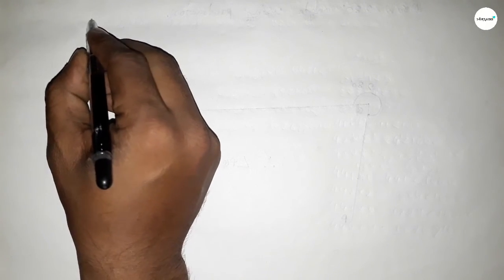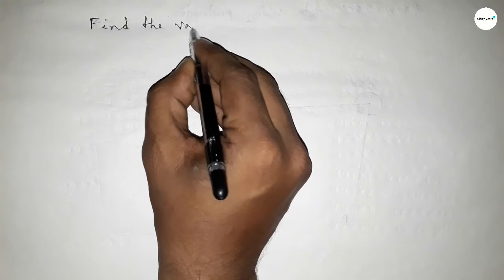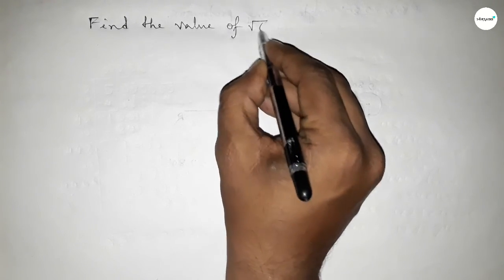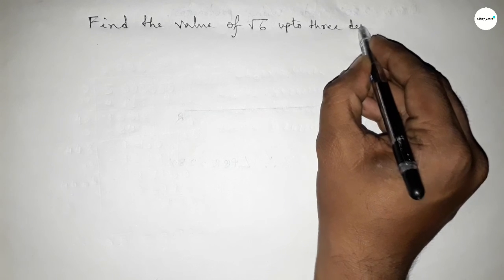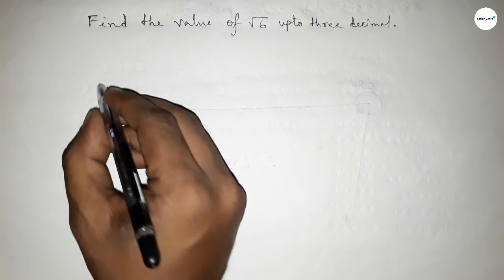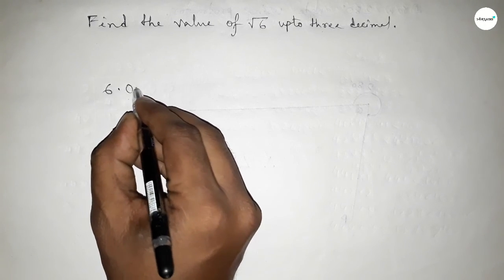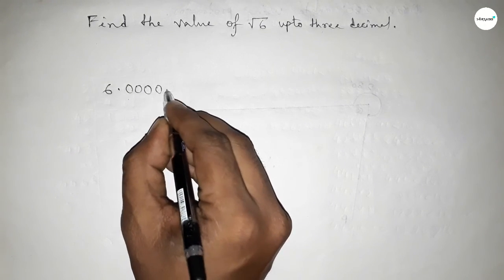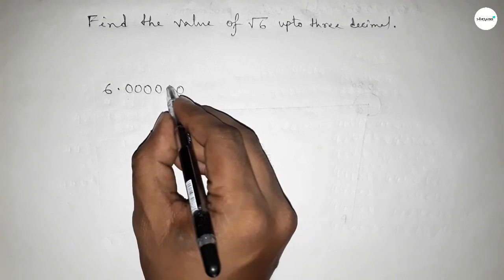Hi everyone, welcome to Sis Share Classes. Today in this video we have to find out the value of root 6 up to 3 decimal places. So let's start the video. First of all, write here the value 6. We have to find out up to 3 decimal, so taking here a point and after the point taking 6 zeros.